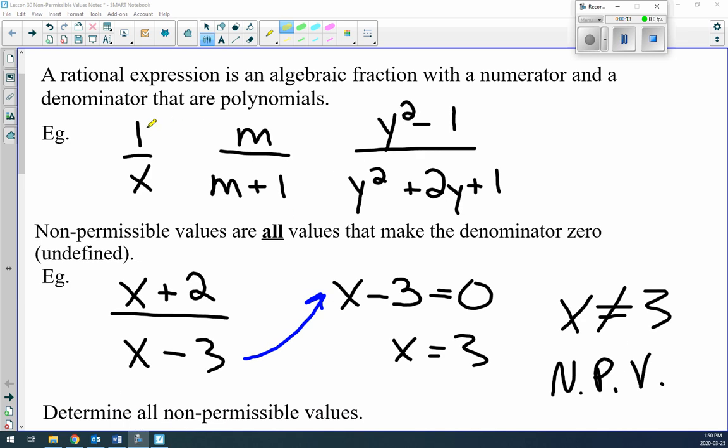There are multiple examples. Look here, we have 1 over x, or m over m+1, or even (y²-1) over (y²+2y+1), so binomial over trinomial. All of these are rational expressions.